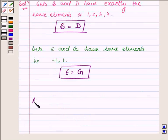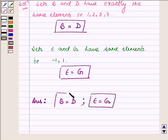Thus our answers are set B is equal to D and E is equal to G. So this completes the solution. Hope you enjoyed it. Take care and have a good day.